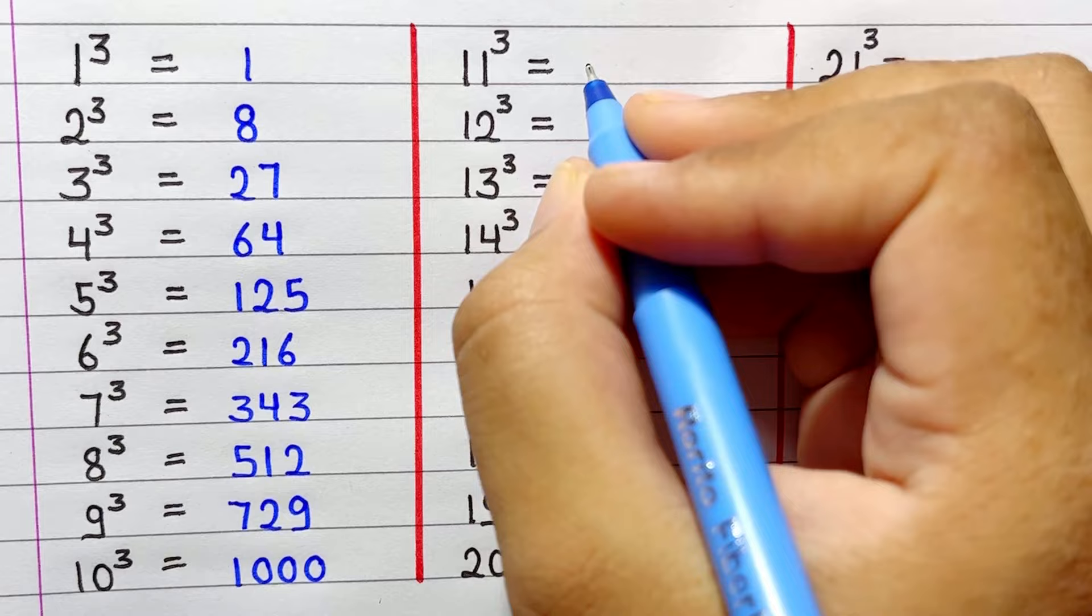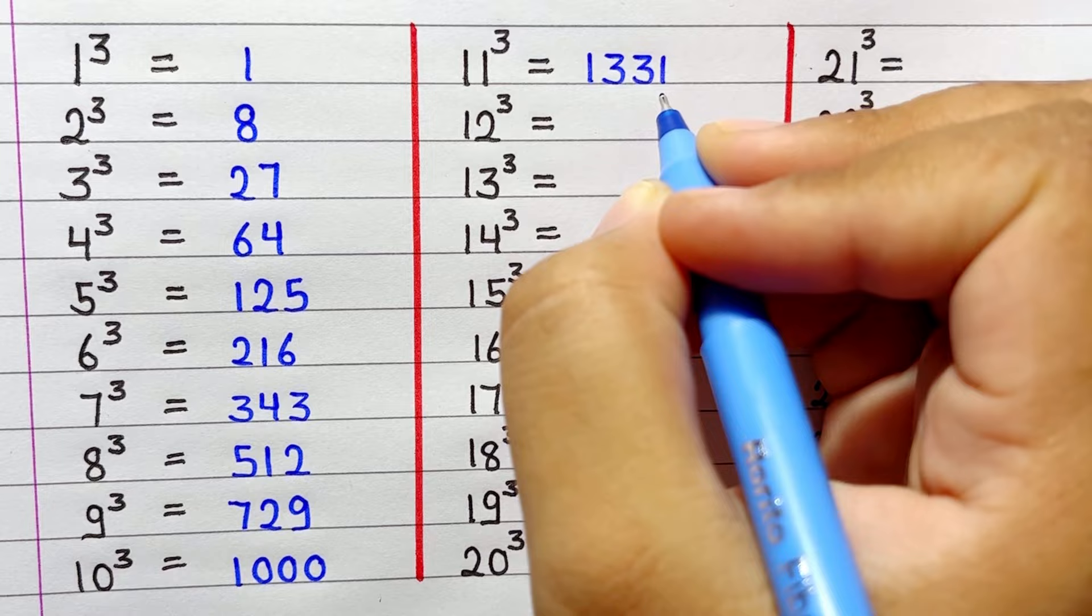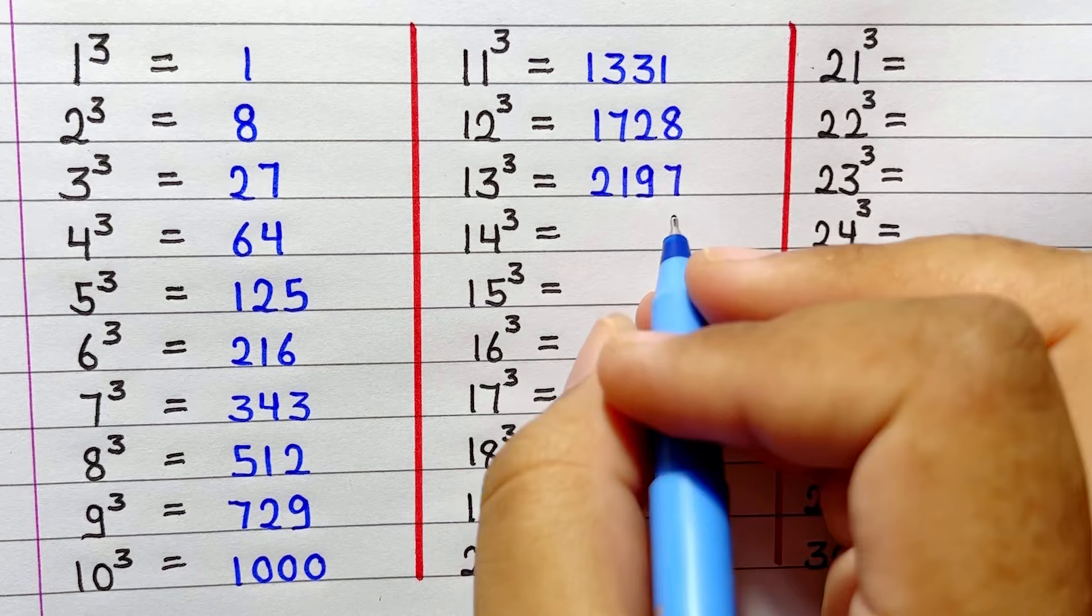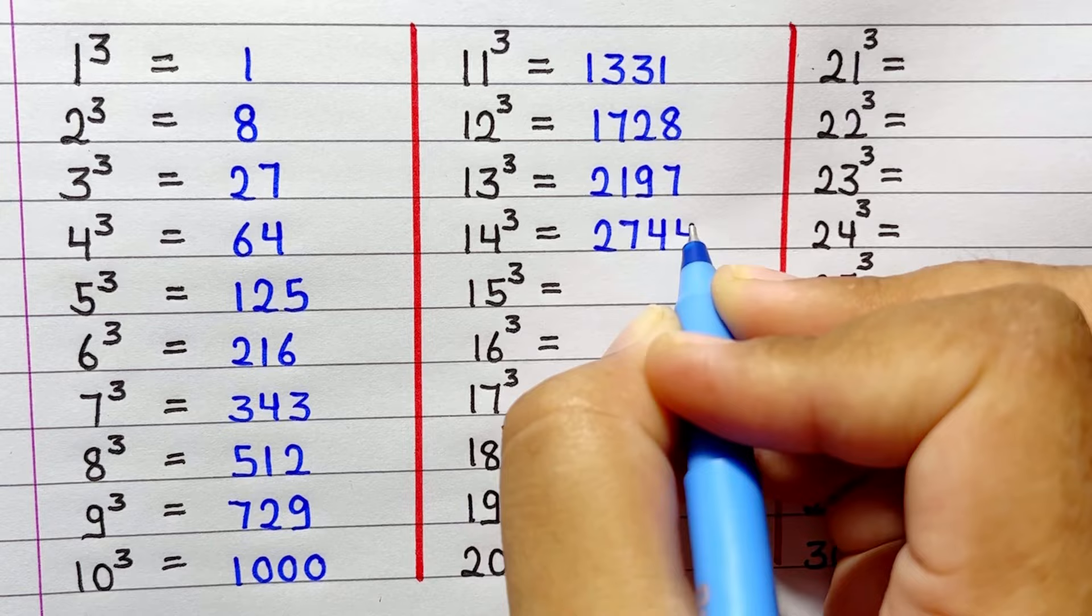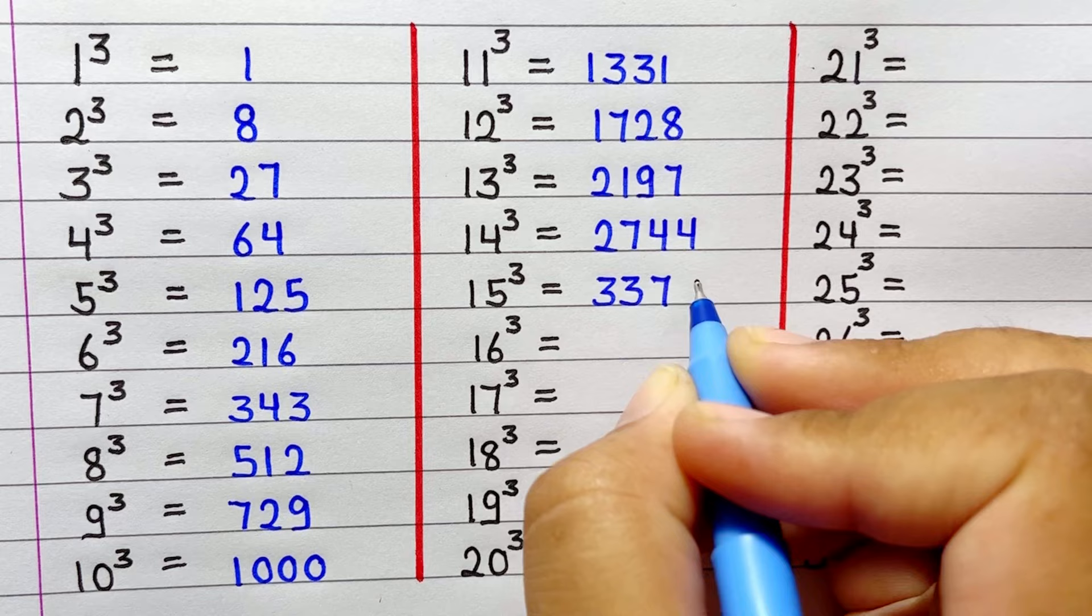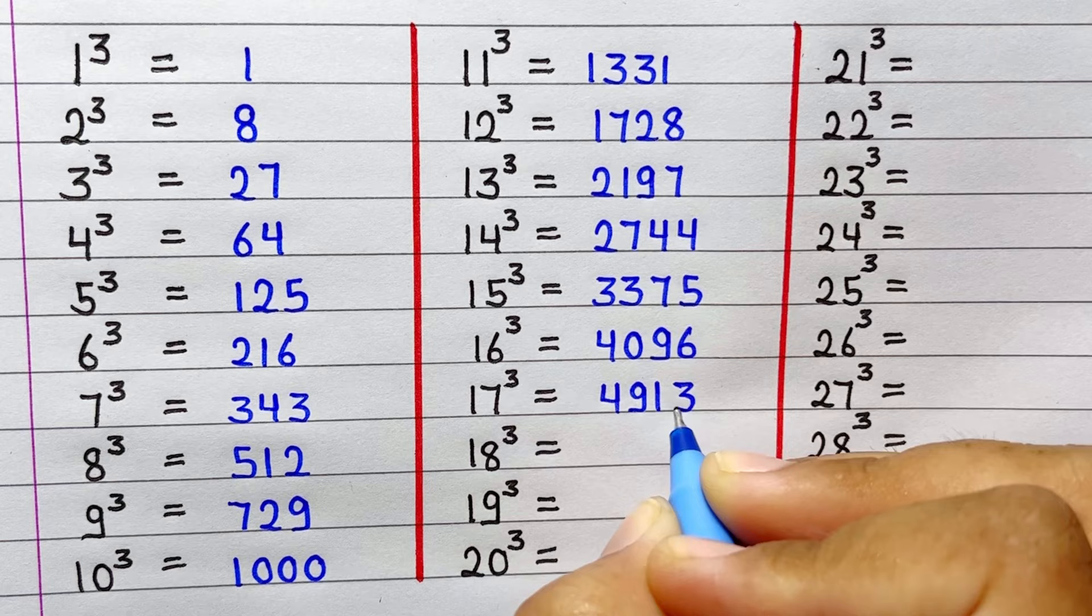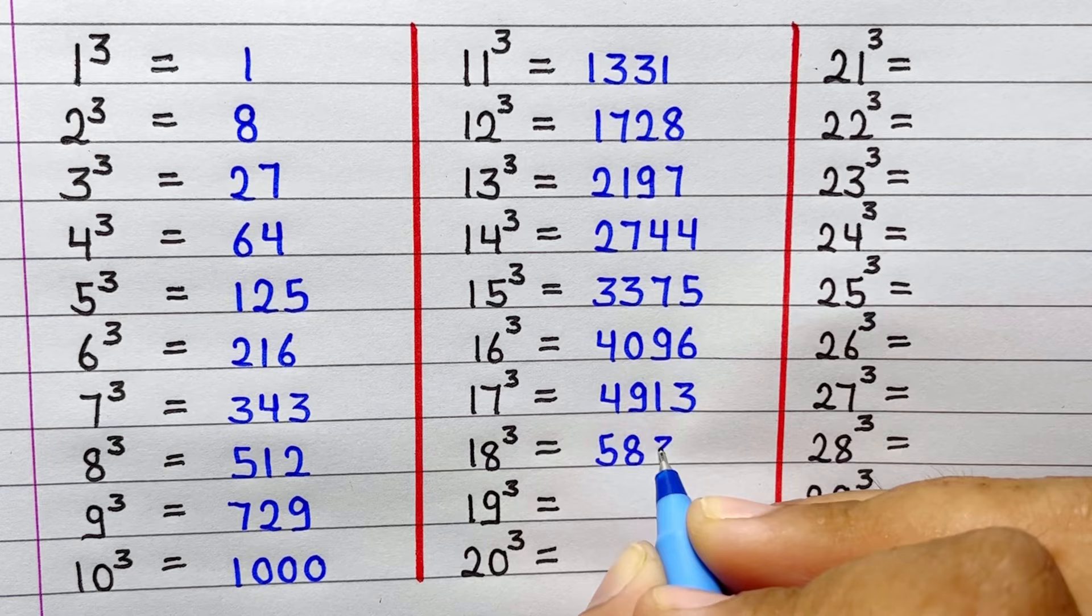Cube of 11 is 1331. Cube of 12 is 1728. Cube of 13 is 2197. Cube of 14 is 2744. Cube of 15 is 3375. Cube of 16 is 4096. Cube of 17 is 4913. Cube of 18 is 5832.